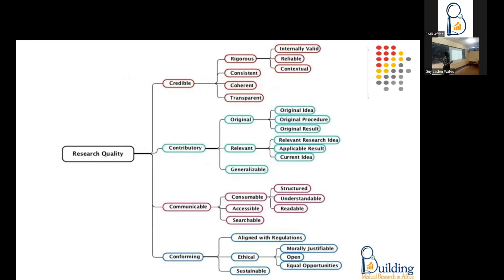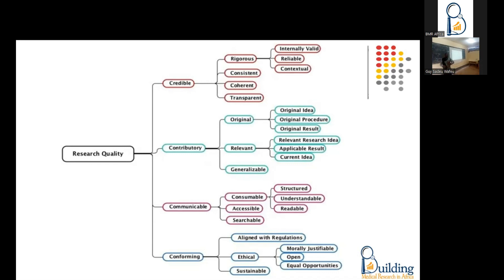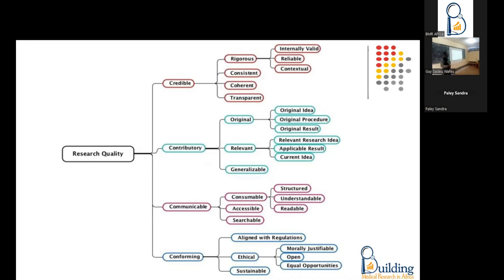Globalement, il y a le fait que le travail doit être crédible — c'est-à-dire que le résultat qu'on rend, on puisse croire en ce résultat. Il faudrait que la méthode utilisée permette qu'on puisse avoir confiance. Il faudrait que le travail apporte quelque chose — une contribution dans le contexte où il est fait. Également, la façon dont les résultats sont rendus — la communication doit être bonne et respecter les principes de la recherche, de l'éthique, de l'administration.